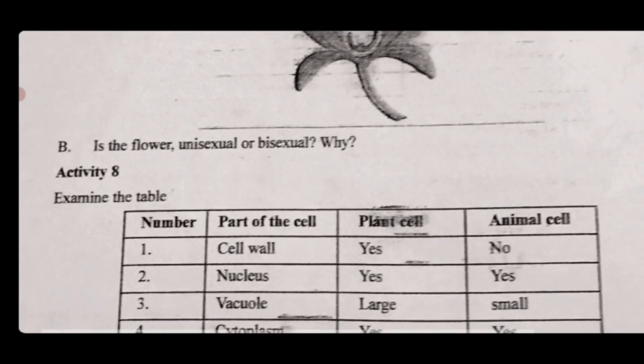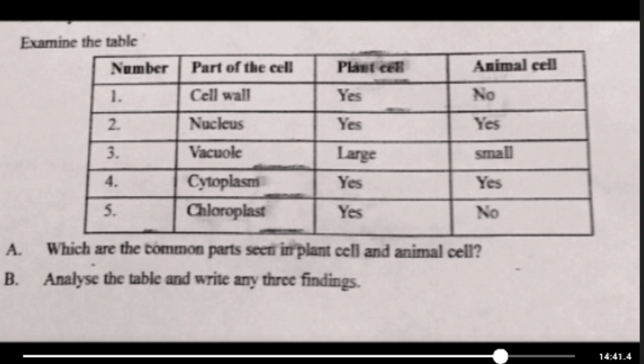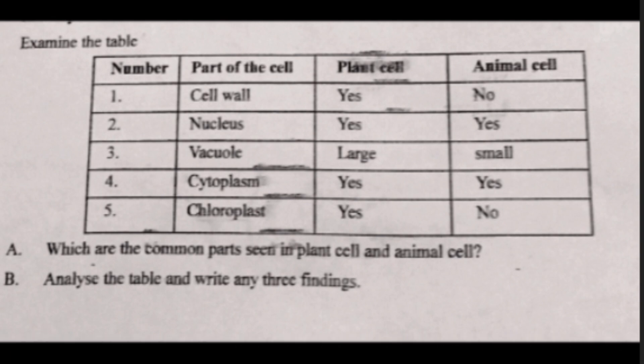Activity Eight: examine the table with parts of the cell compared in plant cell and animal cell. Cell wall: present in plant cell — No in animal cell. Nucleus: present in both. Vacuole: large in plant cell, small in animal cell. Cytoplasm: present in both. Chloroplast: present in plant cell, but not in animal cell.